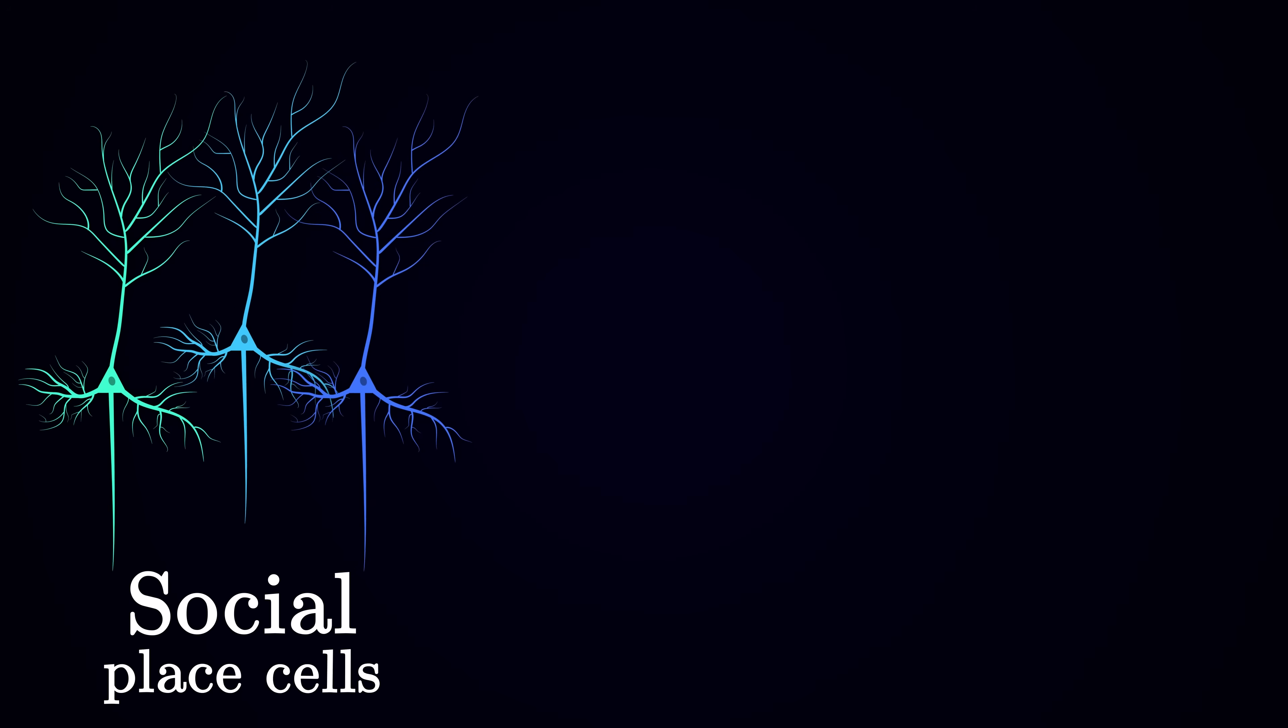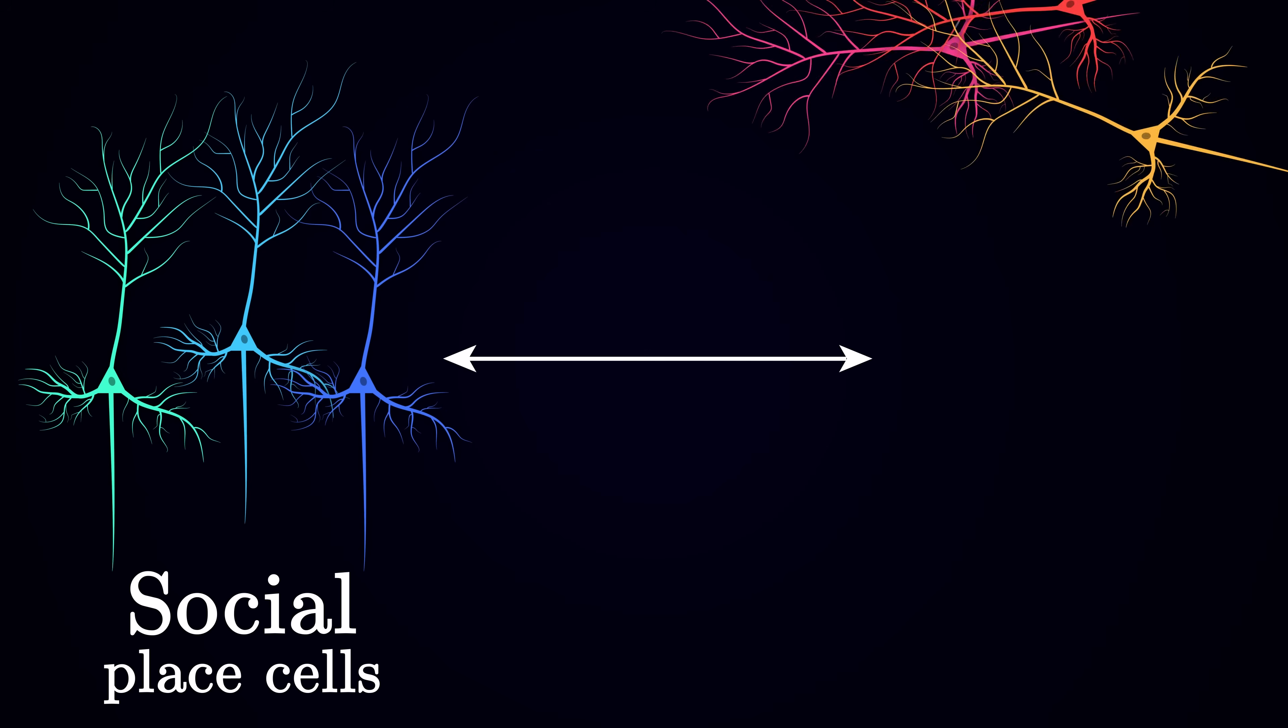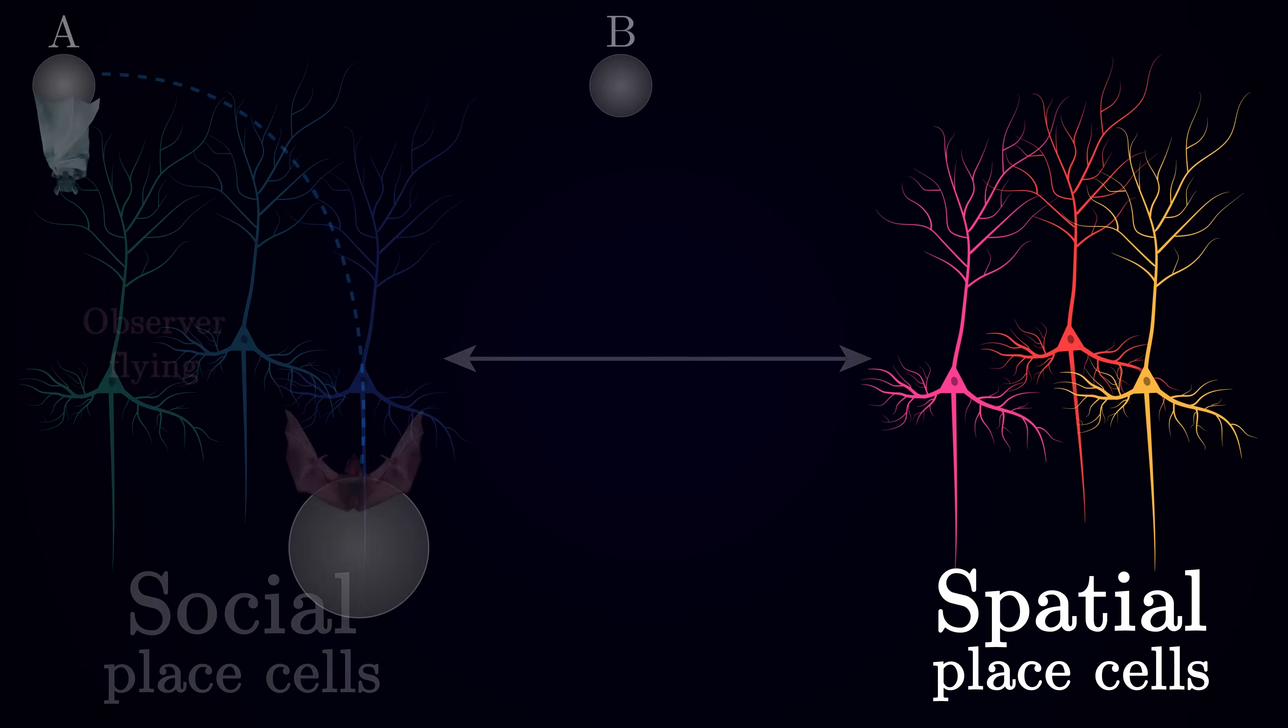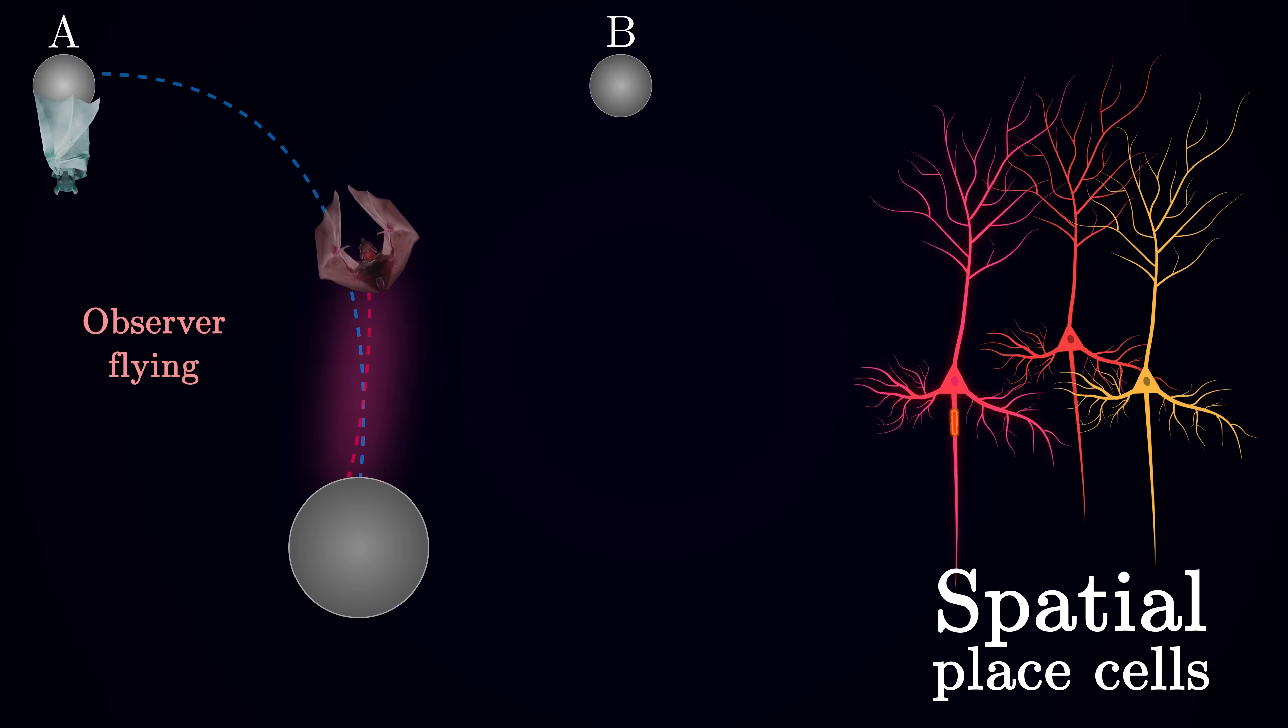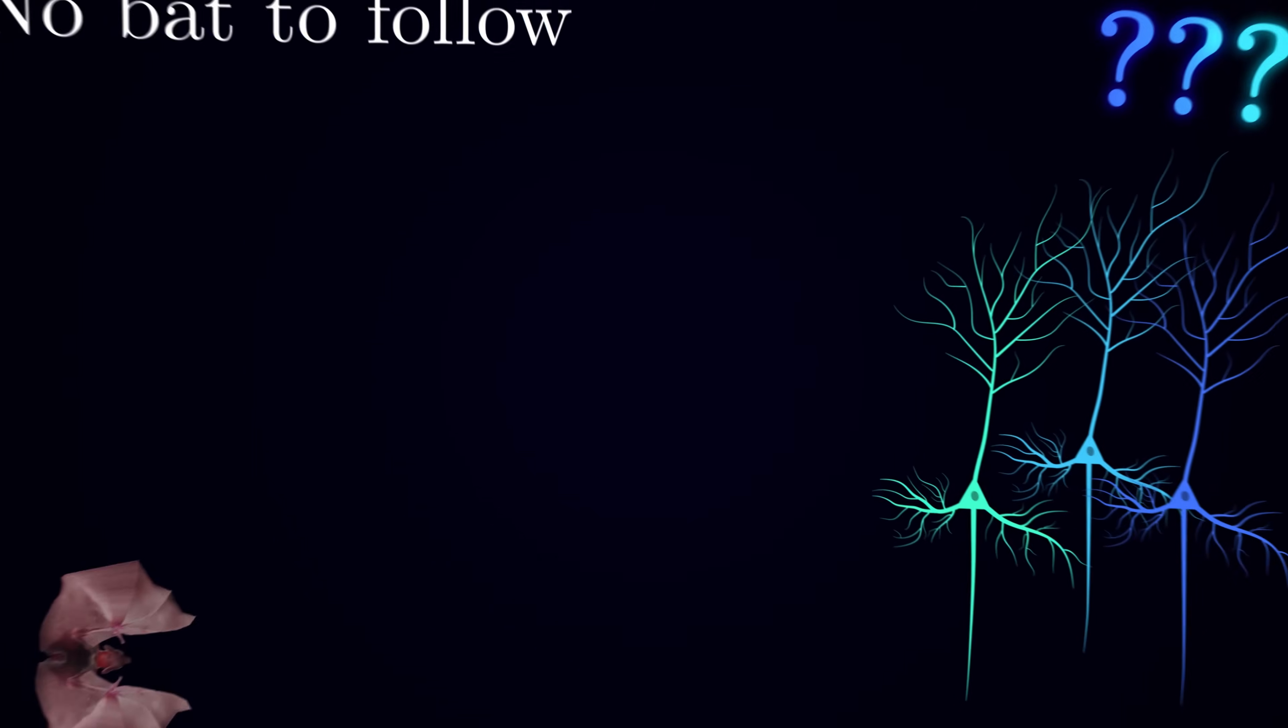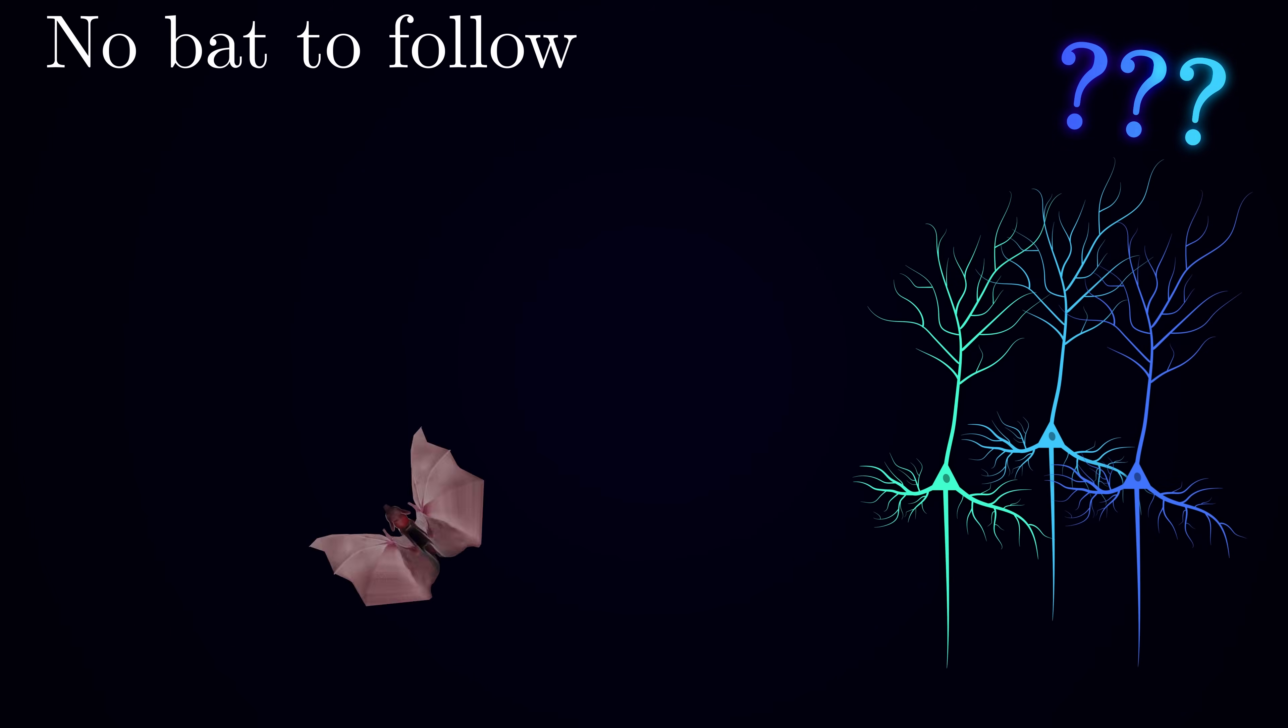A more interesting question, at least to me, is what is the nature of these social place cells? What is their relationship with purely spatial place cells, which are also there, representing the route when the observer bat itself starts to fly? And what happens to the activity of social place cells when there is no other bat? But before I give you the answer, let's try to think about possible scenarios.